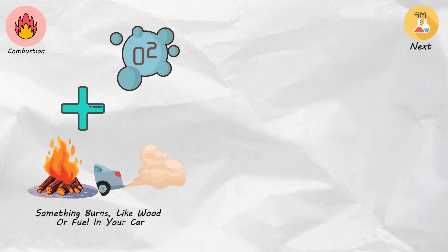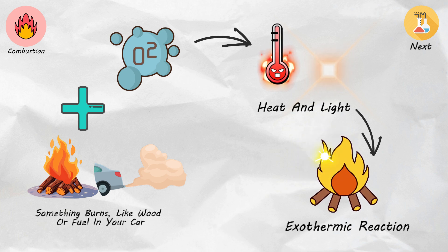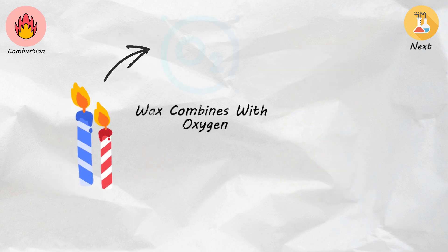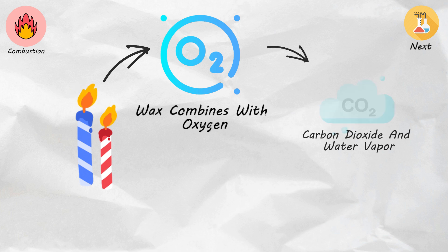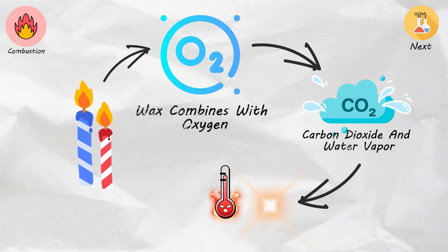When something burns, like wood or fuel in your car, it's combining with oxygen in the air. This mixing creates heat and light, making it a so-called exothermic reaction. For example, when you light a candle, the wax combines with oxygen, making carbon dioxide and water vapor, and giving off light and heat.